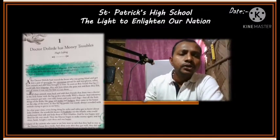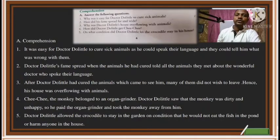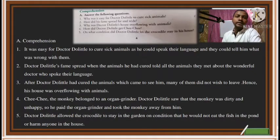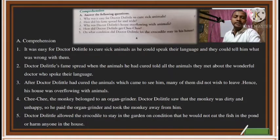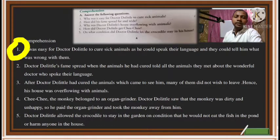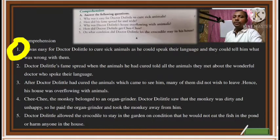The first question is: Why was it easy for Dr. Dolittle to cure the sick animals? Dr. Dolittle had the power of speaking to animals, and because of that it was easy for him to cure them. The answer is: It was easy for the doctor to cure sick animals as he could speak their language, and they could tell him what was wrong with them.